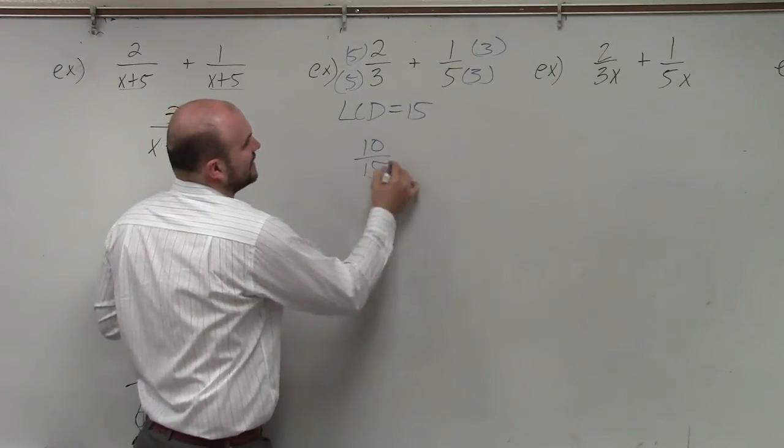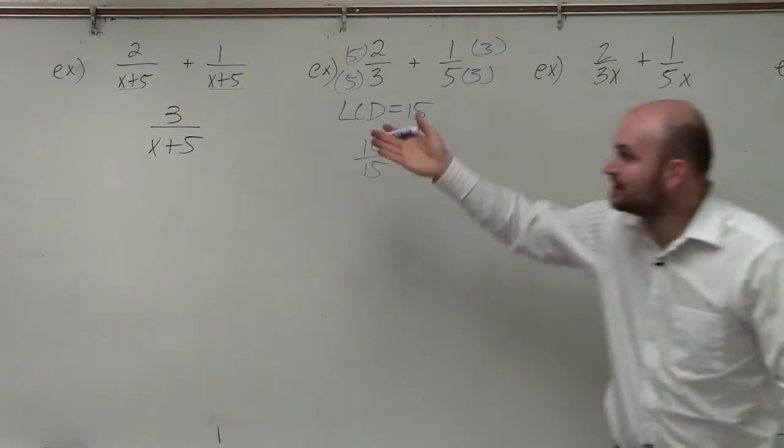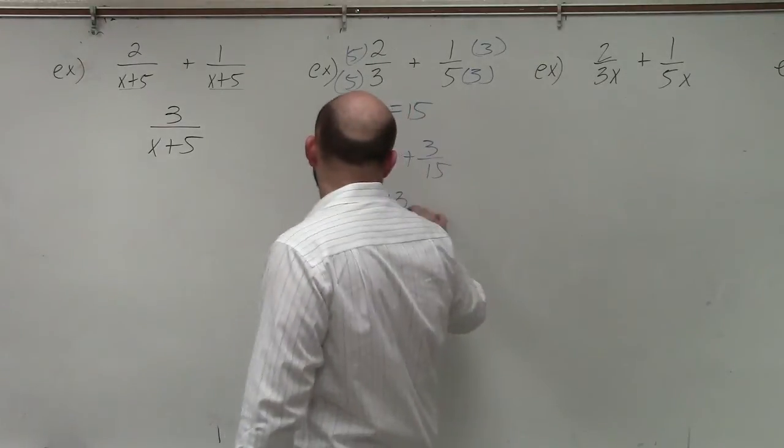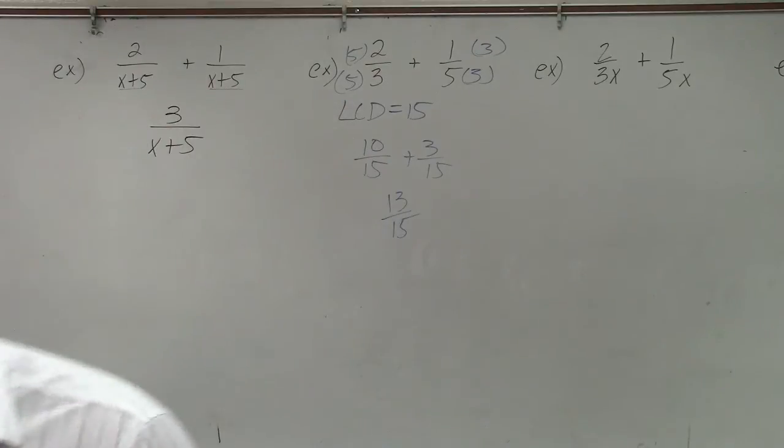So therefore, I have 10 over 15 plus 3 over 15. Now it's like the problems we did over here. Where I have the common denominator, I just add 13 over 15, and that's simple.